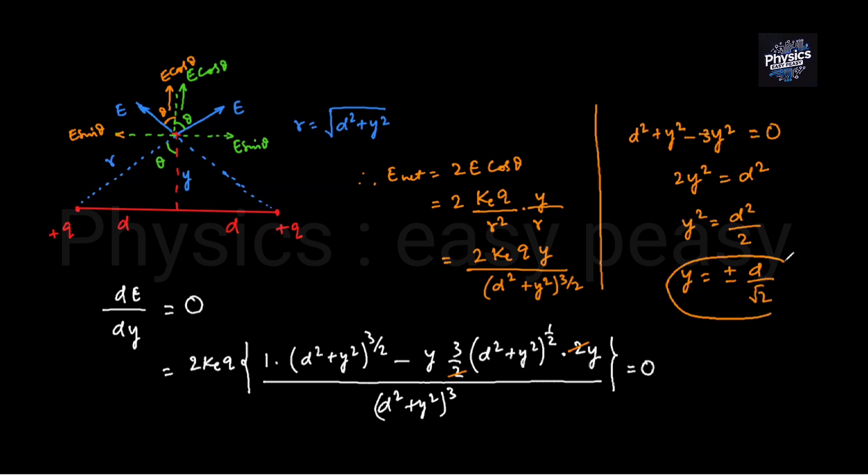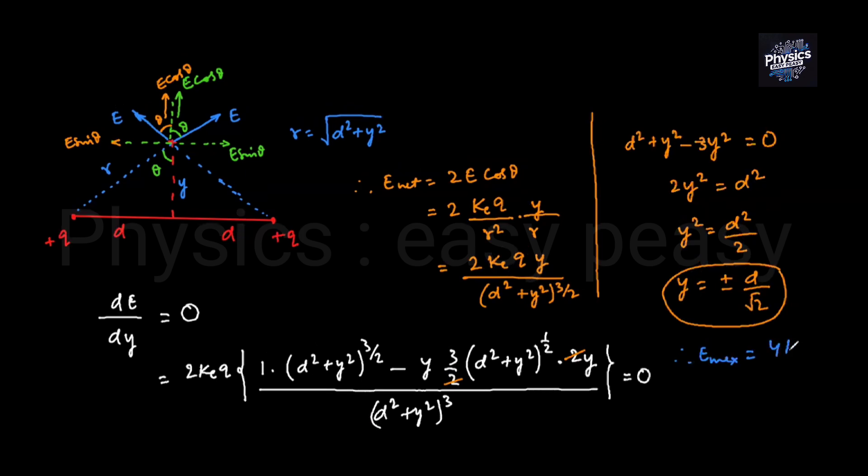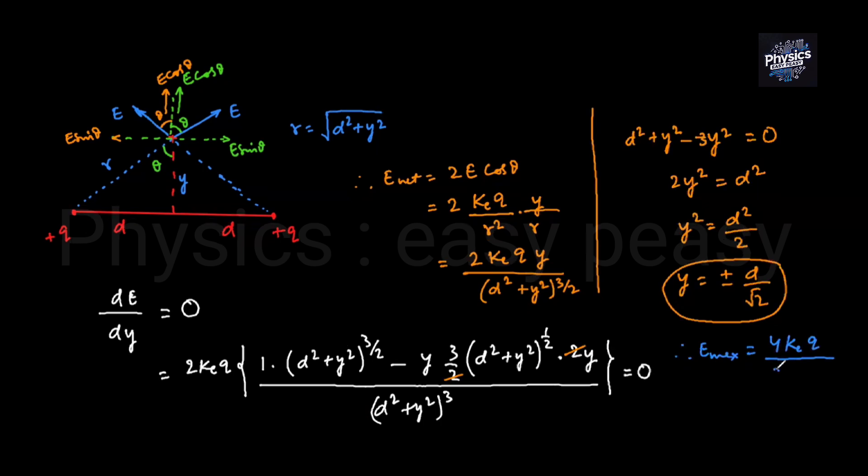At this particular distance, the electric field value is maximum. If we put this value in the equation, the maximum electric field value will be E max equals 4kq divided by 3 root 3 times d squared. This is the maximum electric field value. Thank you.